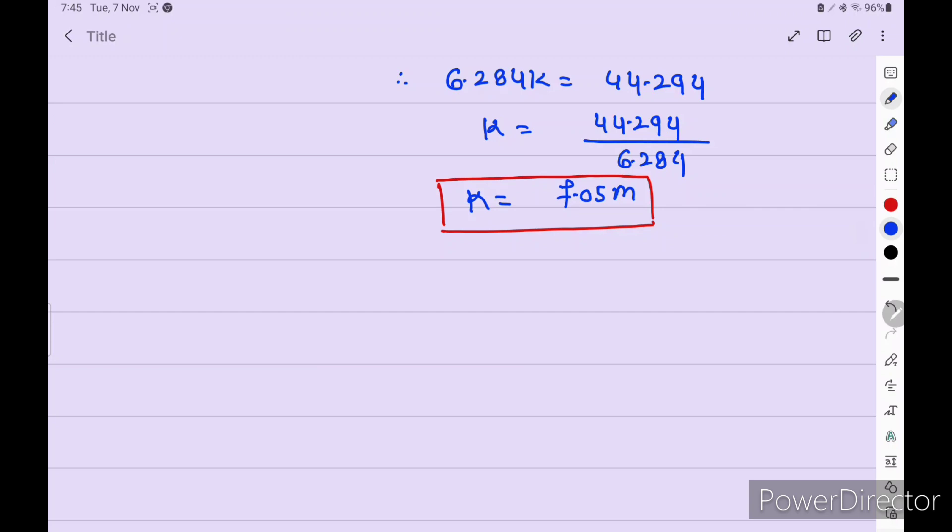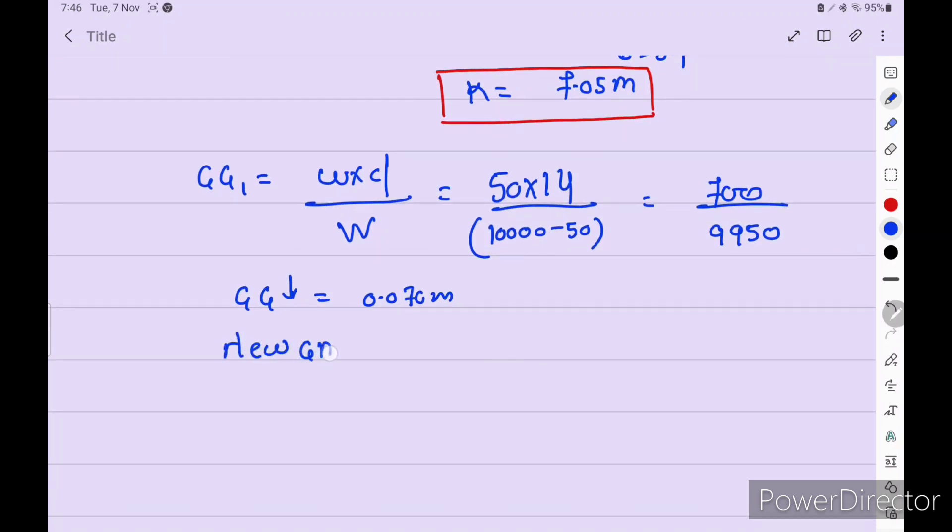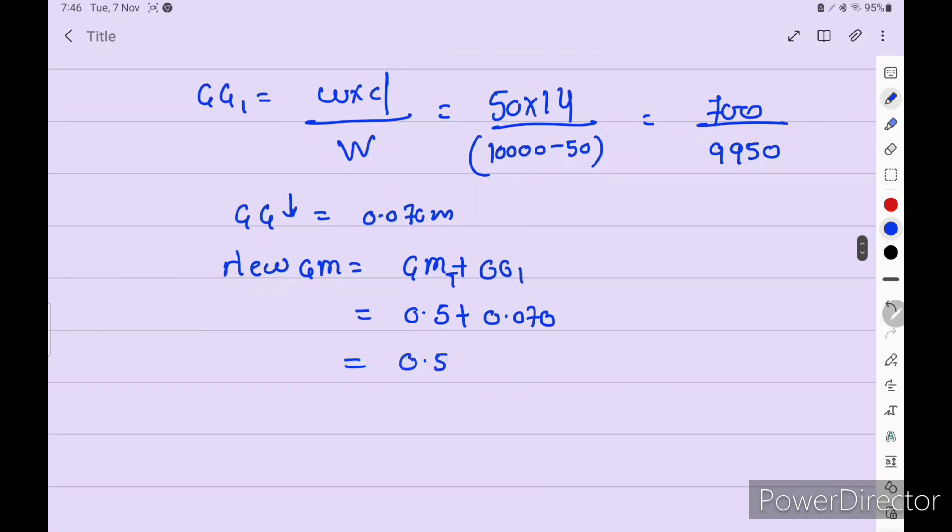Now GG1 formula is W into D divided by capital D the displacement. Small d is 50 into 14 divided by 10,000 minus 50 discharged. We get 700 divided by 9950. GG1 discharged is 0.070 meters. If discharge, then GM will go to opposite side when discharging. So GM dash equals GM plus GG1, equals 0.5 plus 0.070, equals new GM is 0.57 meters.